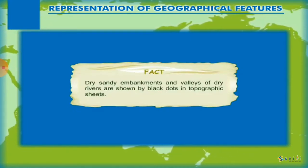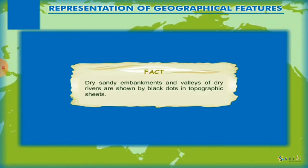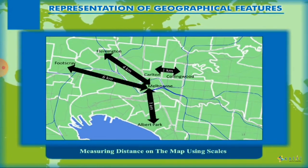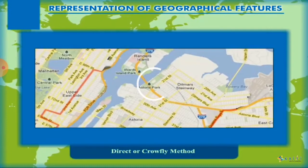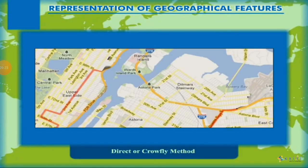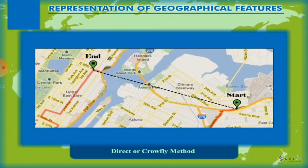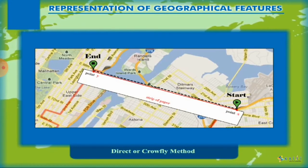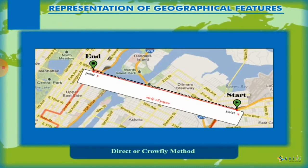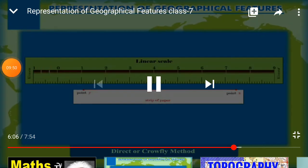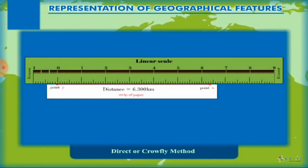Dry sand embankments and valleys of dry rivers are shown by black dots on the topographical sheet. Distance on a map can be measured by two methods. The first is the direct or crow-fly method, measured as the crow flies, overlooking physical barriers. Distance is measured by tracing a strip of paper, foot ruler, or pair of dividers between two immediate points, and then measured on the linear scale. This gives the distance in a straight line.